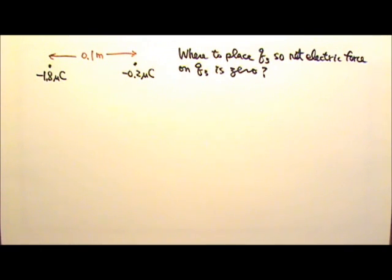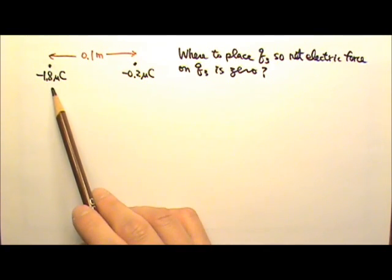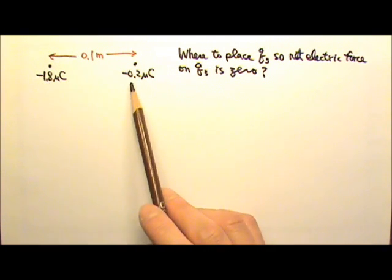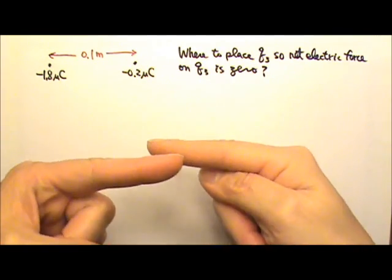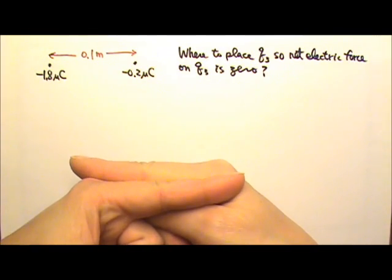Wherever Q3 is placed, there would be two electric forces acting on it, one from the negative 1.8 microcoulombs and the other from the negative 0.2 microcoulombs. So in order for the net force to be zero, these two forces must be equal and opposite so they can cancel.